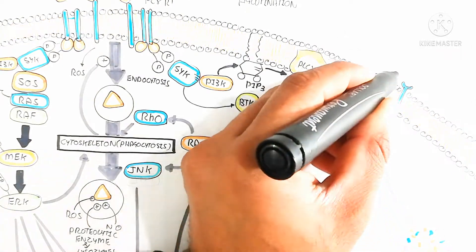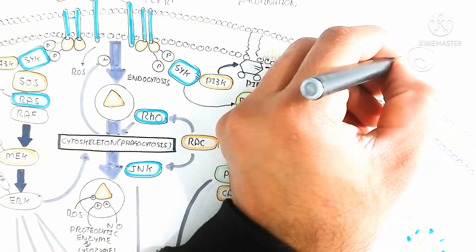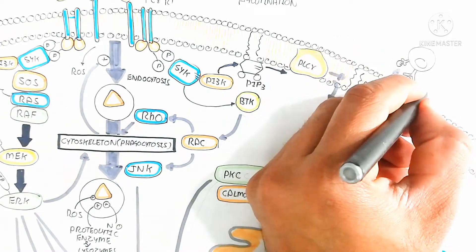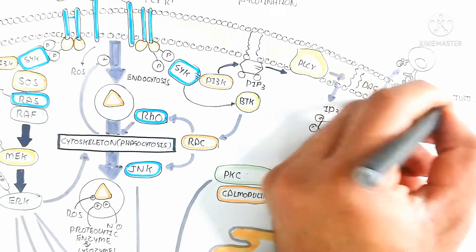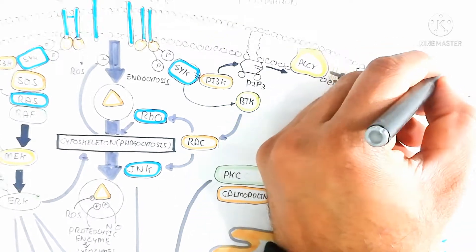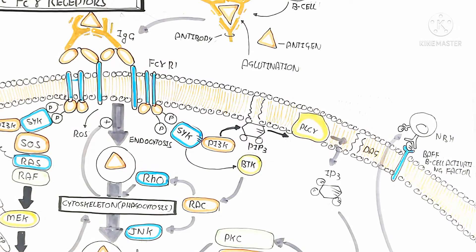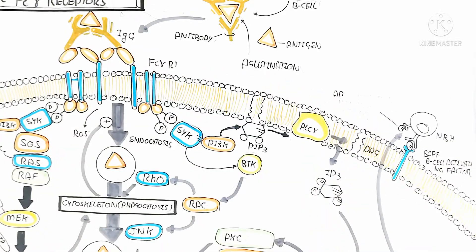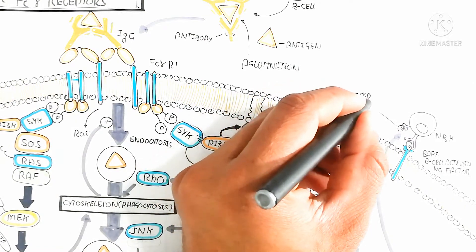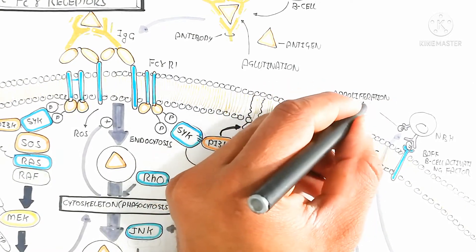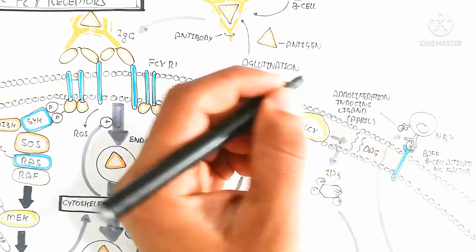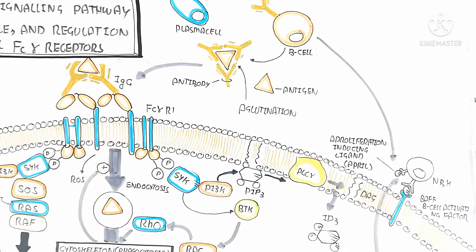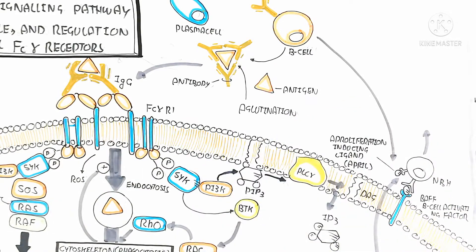A proliferation-inducing ligand binds, produced from the cell. This involves B cell activating factor (BAFF), which stimulates naive B helper cells and is involved in B cell activation and proliferation.